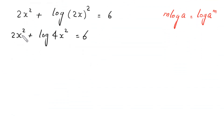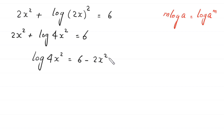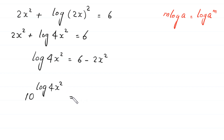Now we move 2x squared to the right-hand side, giving log of 4x squared equals 6 minus 2x squared. We then introduce base 10 to both sides, so the left-hand side becomes 10 to the power of log of 4x squared, and the right-hand side becomes 10 to the power of (6 minus 2x squared).